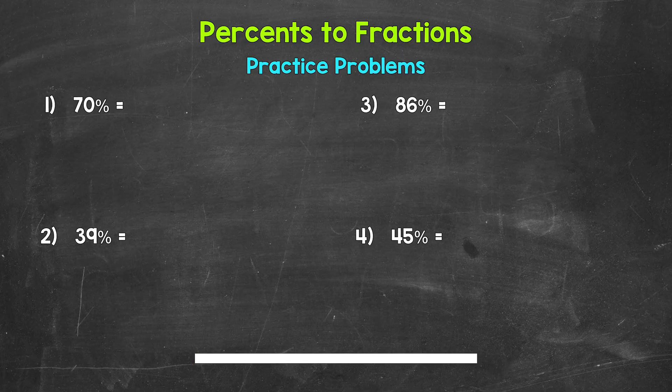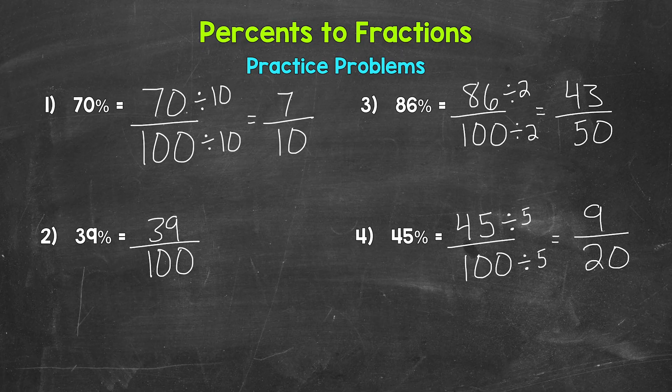Okay, so that was four minutes. Let's go over the answers. For number one, our fraction is 70 over 100, 70 hundredths, which can be simplified to 7 over 10, 7 tenths. For number two, our fraction is 39 over 100, 39 hundredths, which is already in simplest form.